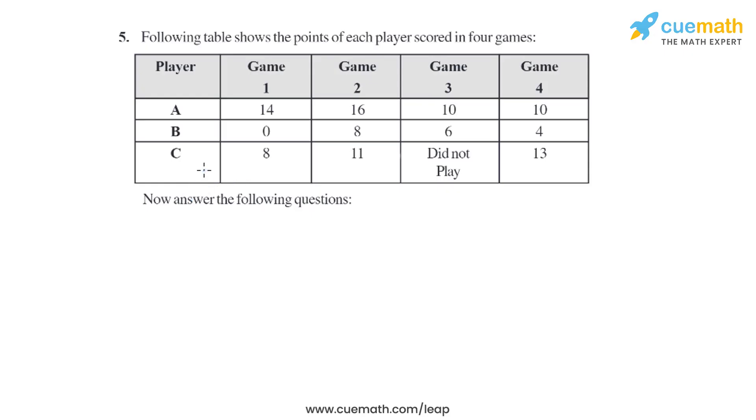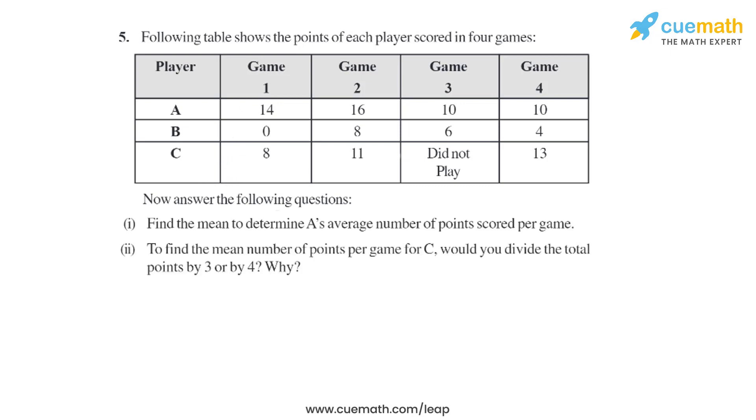Question 5 of this exercise shows a table with the points each player scored in four games. Now answer the following questions. There are four sub-parts. The first two sub-parts say: find the mean to determine A's average number of points scored per game, and to find the mean number of points per game for C, would you divide the total points by 3 or by 4 and why?